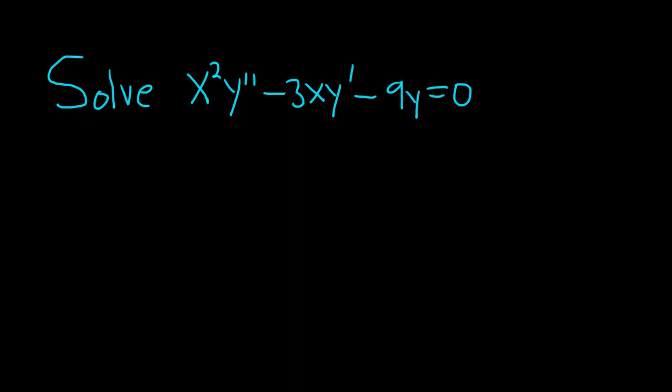Solve x squared times y double prime minus 3x times y prime minus 9y equals 0. This is an example of a Cauchy-Euler differential equation.